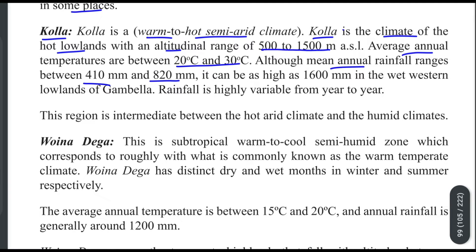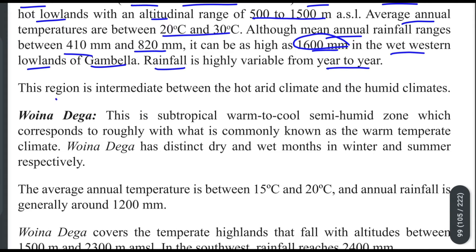Rainfall in the hot lowland zone can be as high as 1,600 millimeters in the wet western lowlands of Gambella. Rainfall is highly variable from year to year. This region is intermediate between hot-arid and humid climates.